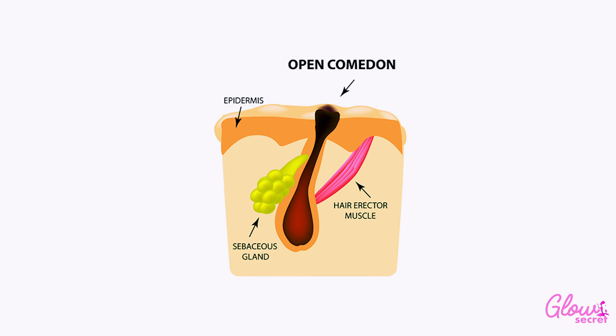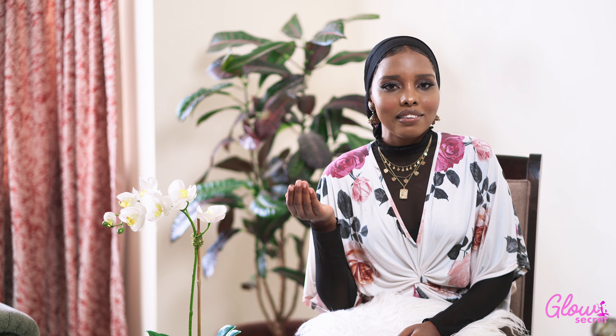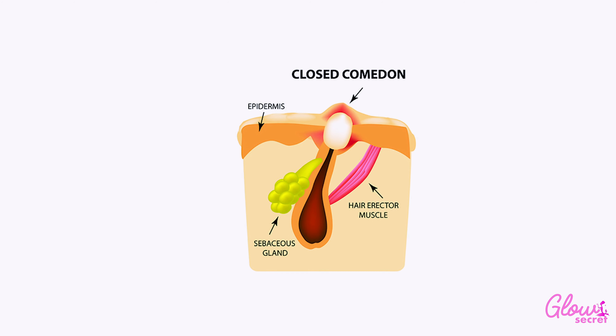So what is acne? Acne is a chronic inflammatory skin condition that causes spots and pimples, especially on the face, shoulders, back, neck, chest, and upper arms. It commonly occurs during puberty when the sebaceous glands activate, but it can also occur at any age.